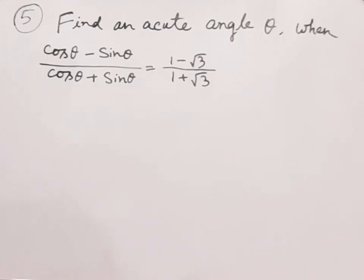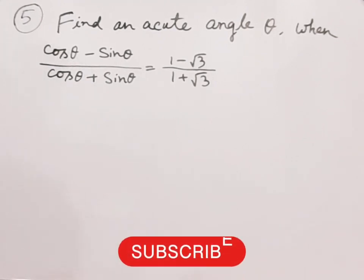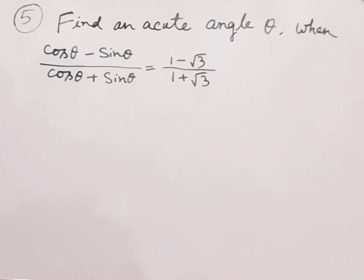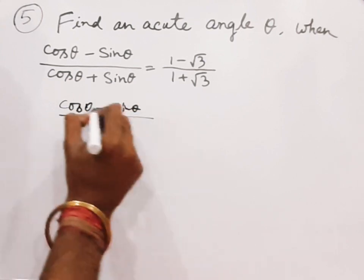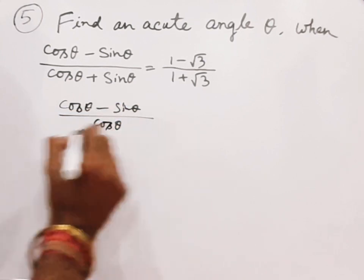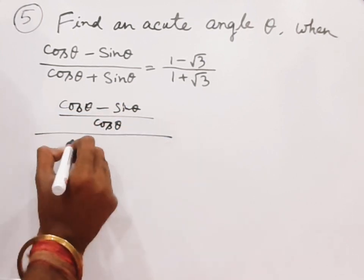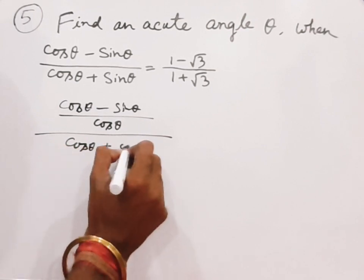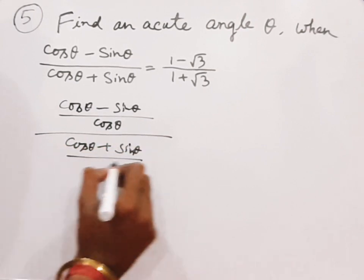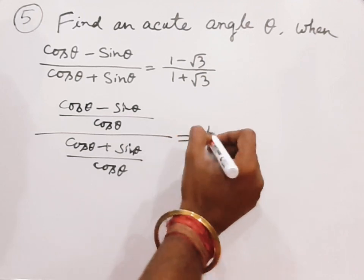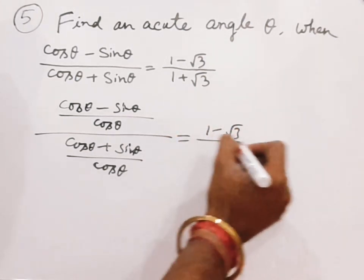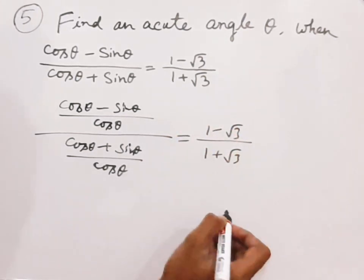The question is: find the acute angle theta when (cos θ − sin θ) divided by (cos θ + sin θ) equals (1 − √3) divided by (1 + √3). So we divide both numerator and denominator of the left side by cos θ.